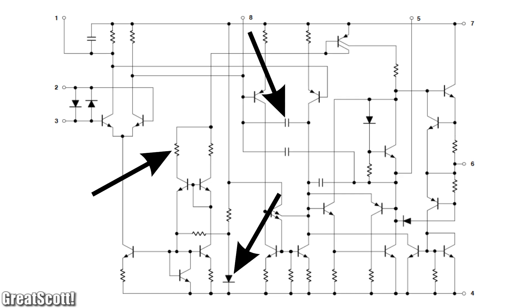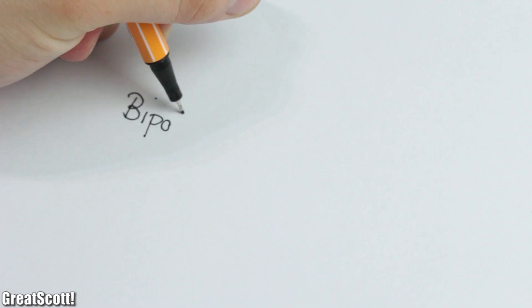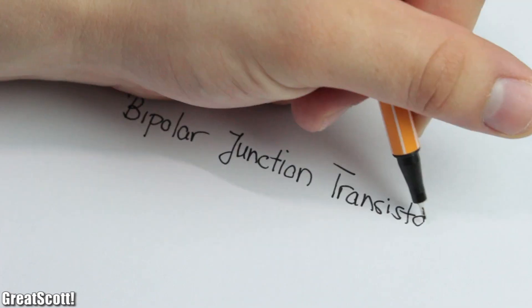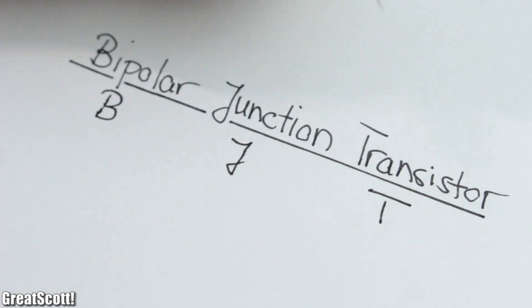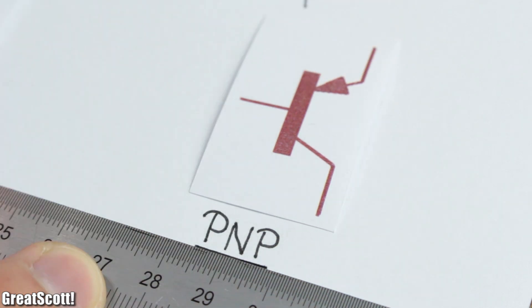But there are two symbols which seem unfamiliar so far. Those are so-called bipolar junction transistors, or BJT for short, which come in two variations: as an NPN type or PNP type.